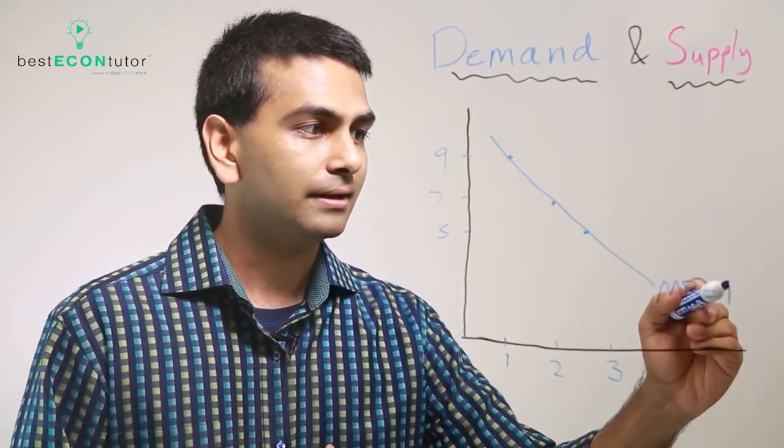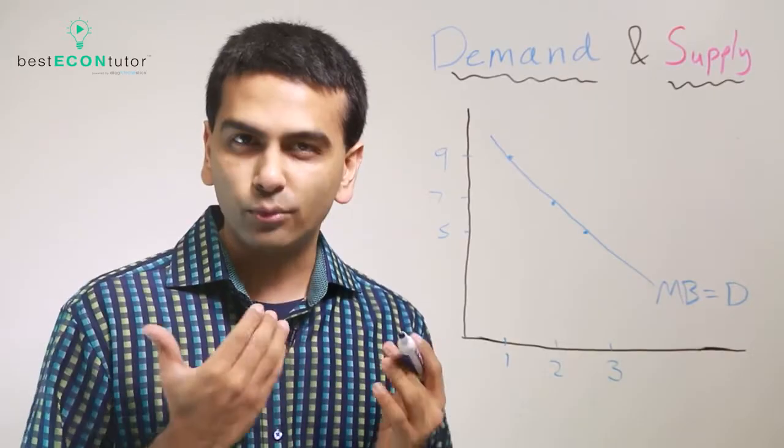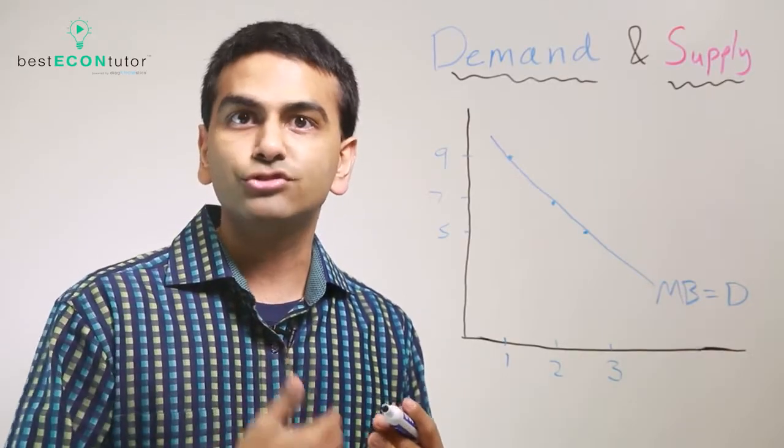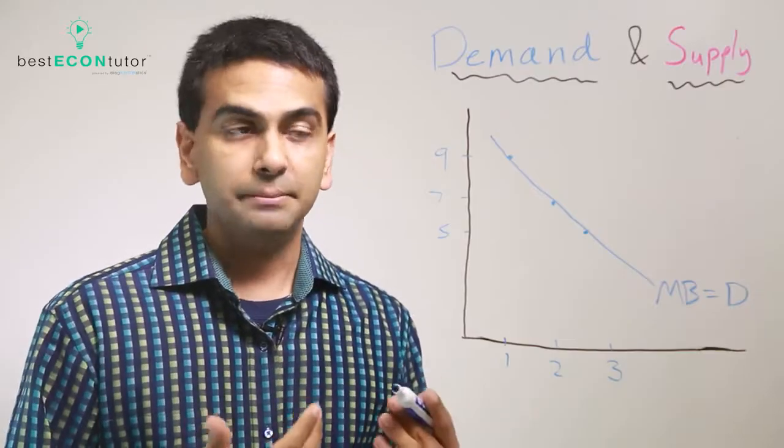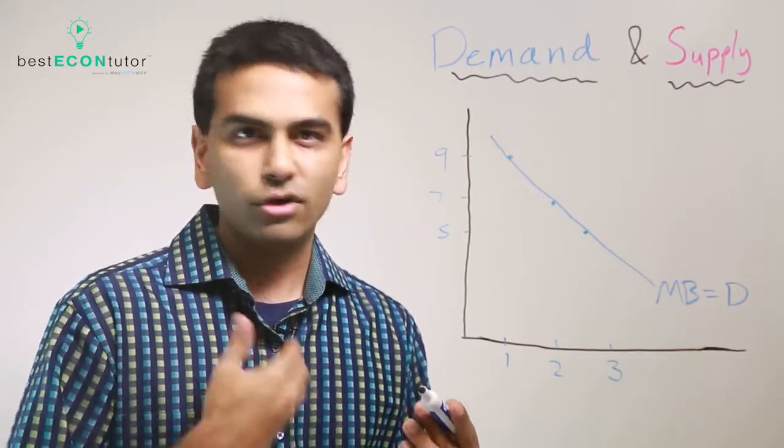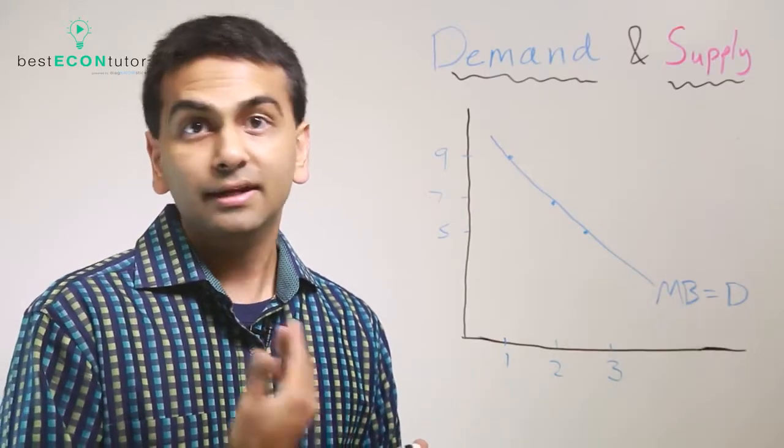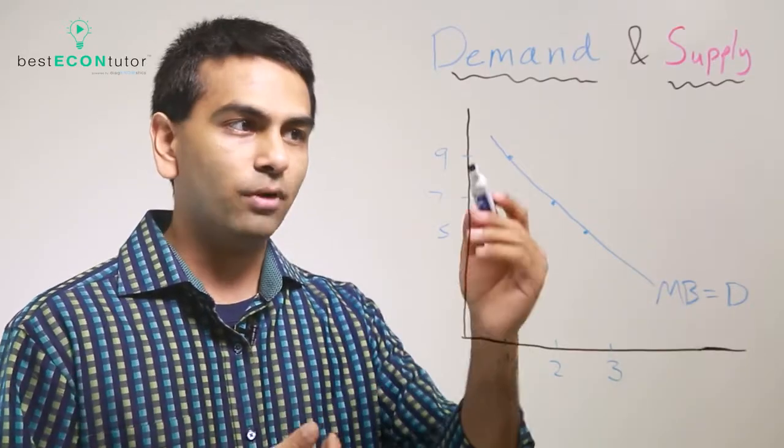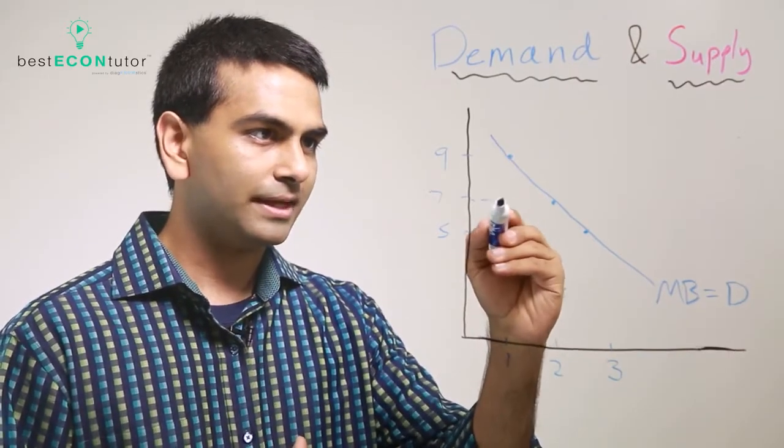That whole fuss about the demand curve—what it really is is the marginal benefit curve. It's the benefit you get from each extra item, and it usually always goes down. The more of any good you have, the less you're going to value the next one, and that's why the demand curve is downward sloping.